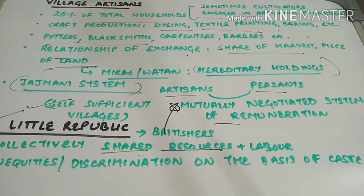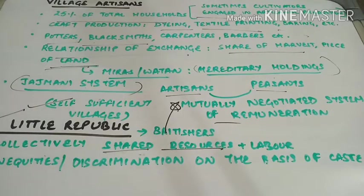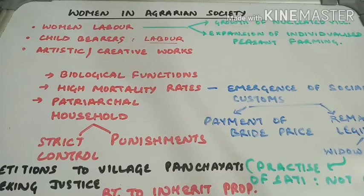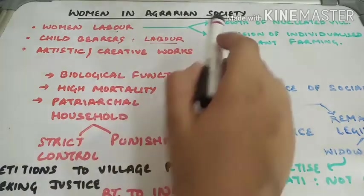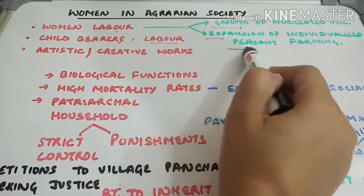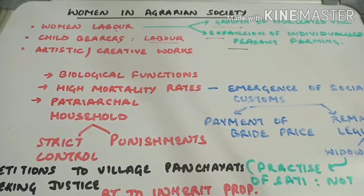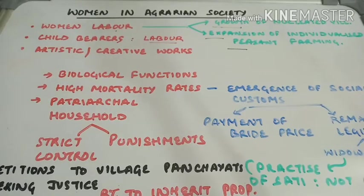The next topic is women in agrarian society. Women were working at par with men — shoulder to shoulder with men. The two major reasons for this are: first, the growth of the nucleated village, and second, the expansion of individualized peasant farming. A nuclear family is in opposition to a joint family — there is a male, a female, and their children. In the household there was only one person who could primarily work, so it became important for women also to enter into field work.